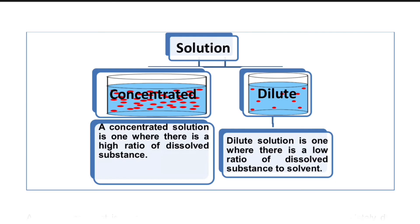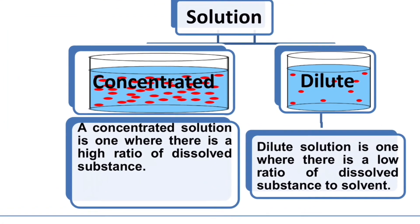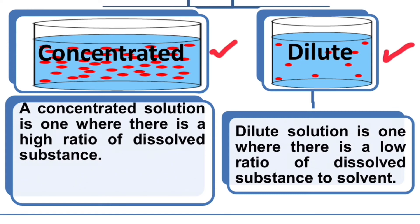If you have a strong acid and want to use it, most of the time you have to dilute it first, just to weaken it a bit, because it is too corrosive in its original state. A concentrated solution is one where there is a high ratio of dissolved substance (solute) to solvent, while a dilute solution is one where there is a low ratio of dissolved substance to solvent.